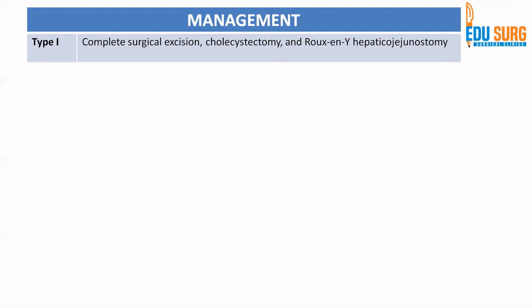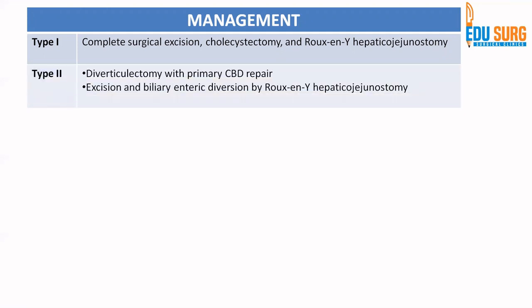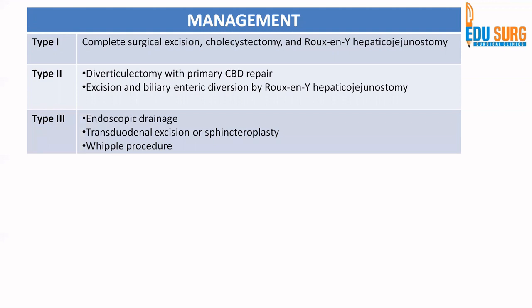Coming to management, we will discuss it based on the type of choledocal cyst. For Type 1 — all three subtypes A, B, and C — the treatment is complete surgical excision with cholecystectomy and Roux-en-Y hepaticojejunostomy. For Type 2, treatment is again surgical: diverticulectomy with primary CBD repair, or excision with Roux-en-Y hepaticojejunostomy. So in Types 1 and 2, the treatment is surgery with complete excision and Roux-en-Y hepaticojejunostomy.